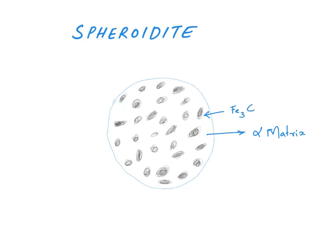In the previous videos I have explained how spheroidite is formed, what is the reason for these cementite particles to take the shape of a sphere. Actually, the driving force for this particular reaction to happen is the reduction in the phase boundary area.